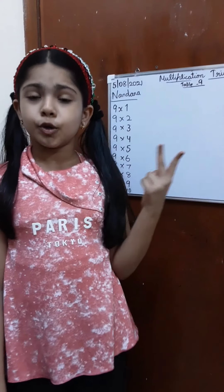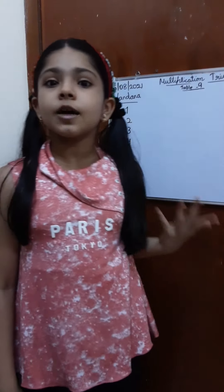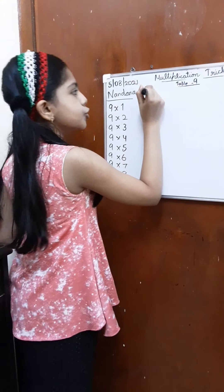Now you can do trick number 2. Trick 1 was about finding the product of the factors. Trick 2 is about finding whether a number is a multiple of 9. So let's start with trick number 2.